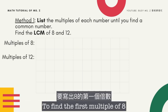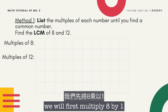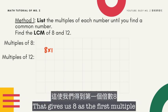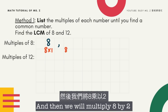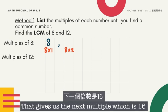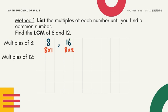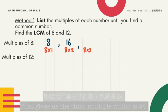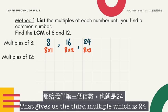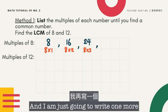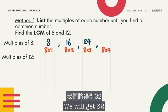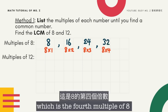To find the first multiples of 8, we will first multiply 8 by 1. That gives us 8 as the first multiple. Then we will multiply 8 by 2, giving us 16. Then we multiply 8 by 3, giving us the third multiple, which is 24. And multiplying 8 by 4 gives us 32, which is the fourth multiple of 8.